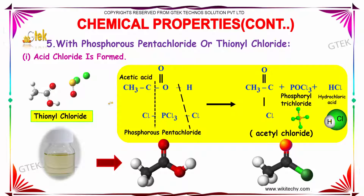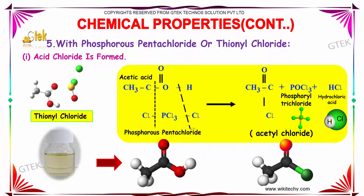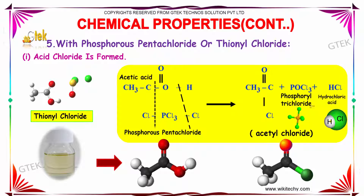Reaction with phosphorus pentachloride or thionyl chloride. Acetic acid when reacted in the presence of phosphorus pentachloride produces acetyl chloride and phosphoryl trichloride, along with hydrochloric acid as a byproduct.